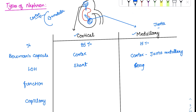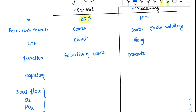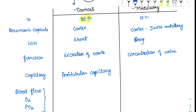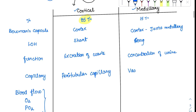Coming to function: the most important function of the kidney is excretion of waste. That is why 85% of the kidney — the cortical nephrons — performs excretion of waste. The medullary nephron, because of its long loop of Henle studied in the countercurrent mechanism, is involved in concentration of urine. The capillaries supplying cortical nephrons are the peritubular capillaries — a wound-up structure around the tubule — whereas for medullary nephrons, the capillaries are the vasa recta.